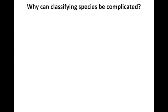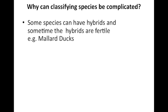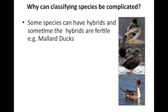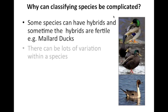Where are the complications with classifying what a species is? Some species can have hybrids, and sometimes those hybrids are fertile. For example, mallard ducks can breed with lots of different types of ducks, and very often their offspring, which is a hybrid, is still fertile. Additionally, there can be lots of variation within a species, making it difficult to decide which organisms belong to the same species — for example, these two are both mallard ducks, yet they look very different from each other.